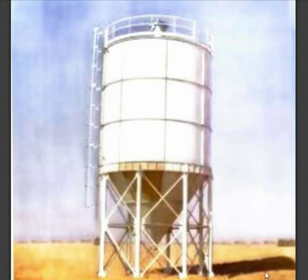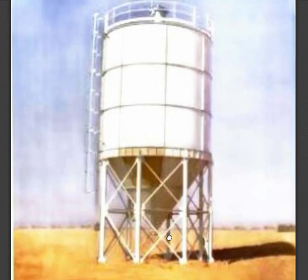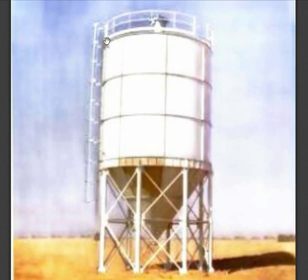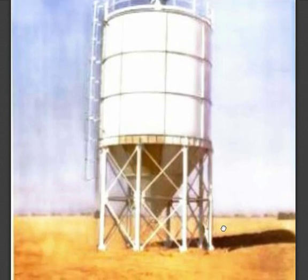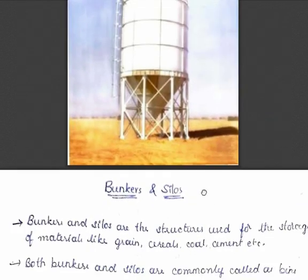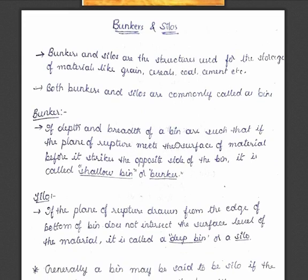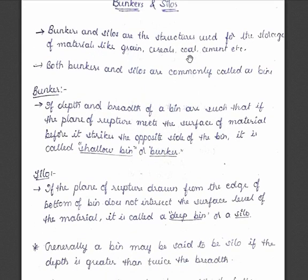Let us now get into the new topic: design of bunkers and silos. This is a figure of a bunker or silo. They look similar but some differences are there. Generally, we prefer a conical bottom because it is easy to fill up and easy to withdraw materials — first in, first out. Bunkers and silos are structures used for the storage of materials like grains, cereals, coal, cement, etc. These are storage bins.